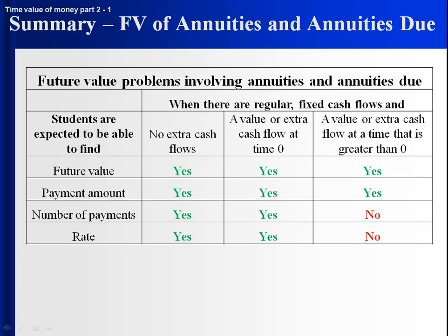The first is what students should be able to find. If there's no extra cash flow — so we're just looking at a straight-up annuity or annuity due — students should be able to figure out the future value, the payment amount, the number of payments, or the rate. Pretty straightforward kinds of stuff.